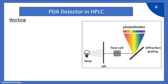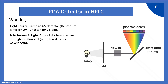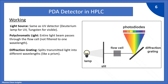Now let's see the working of the PDA detector in HPLC. You can see the schematic diagram on the right hand side. It consists of a lamp, followed by a slit, then a flow cell, followed by a diffraction grating, and then photodiode arrays. Notice that the flow cell is before the diffraction grating, whereas in the UV detector it was after. The light source is the same as in the UV detector — deuterium for UV and tungsten for visible. Here, the entire polychromatic light beam passes through the flow cell without being filtered to one wavelength. The light exiting the flow cell then falls on the diffraction grating, which splits it into different wavelengths like a prism.